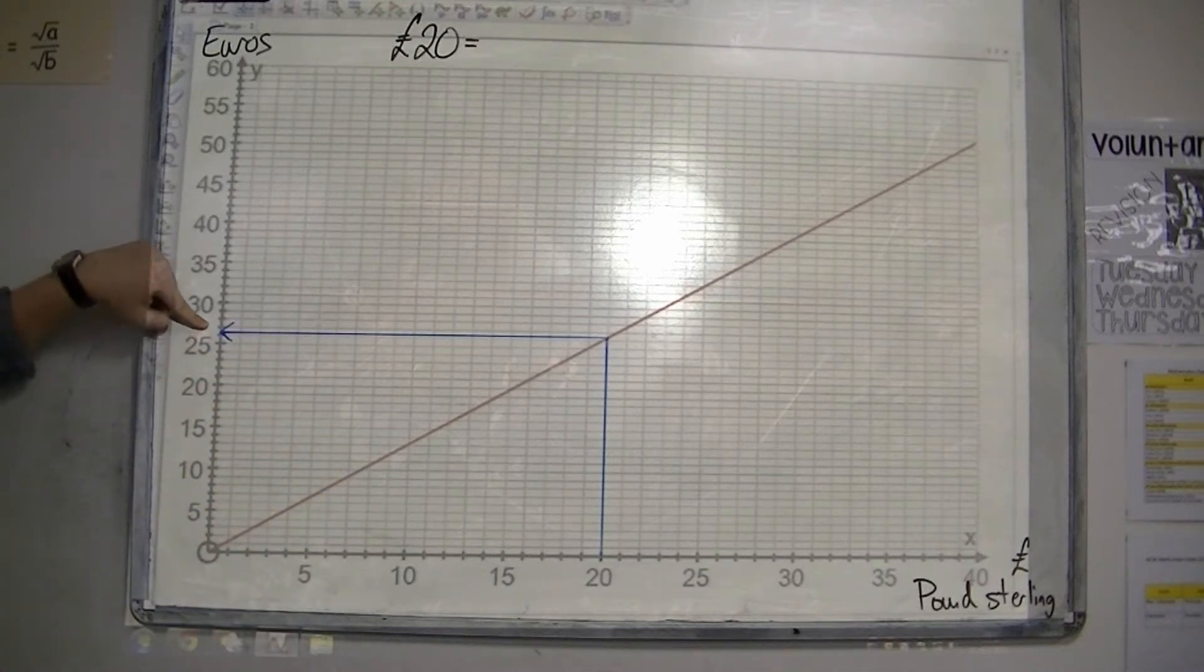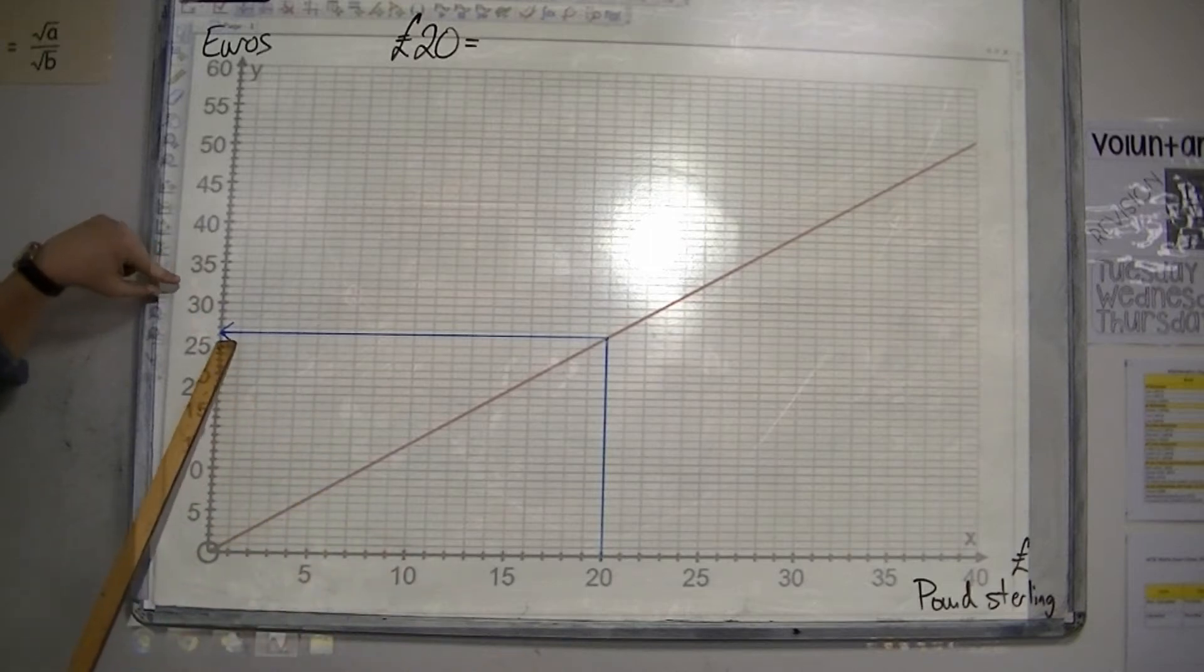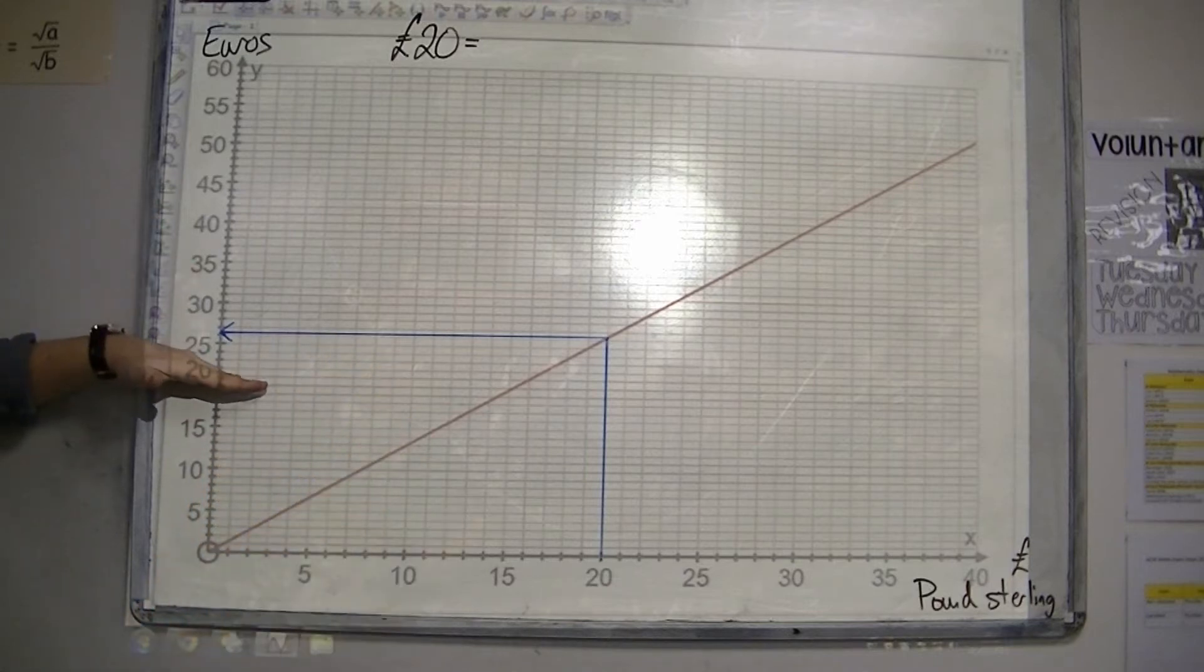Now, you want to get this as accurate as possible. So, make sure you know what these little amounts are going up in. And for mine, they're going up in ones.